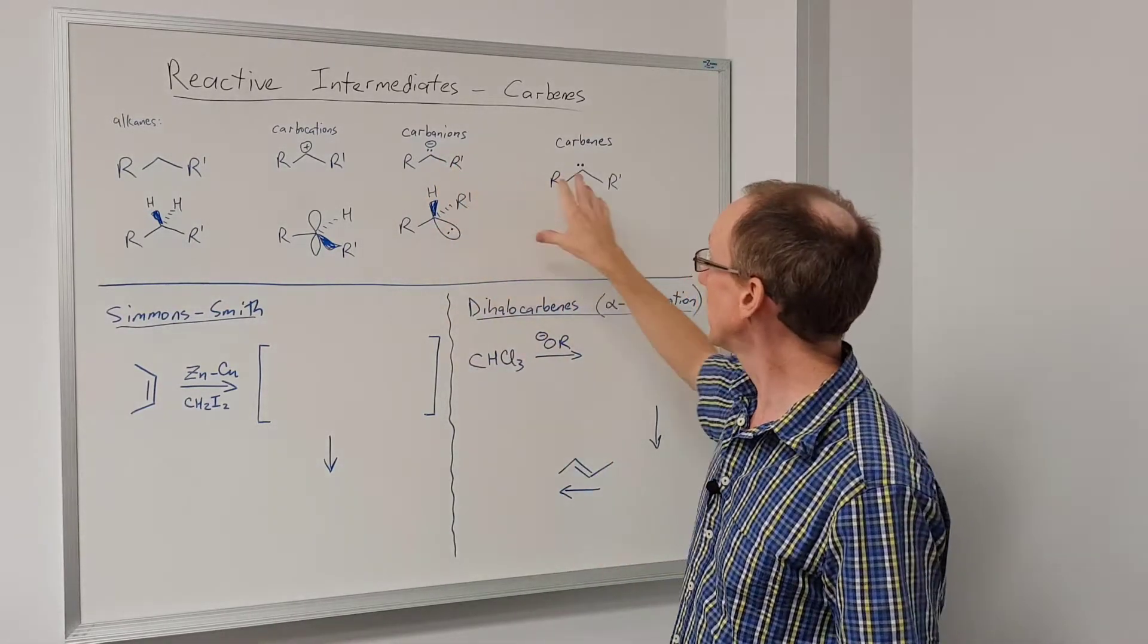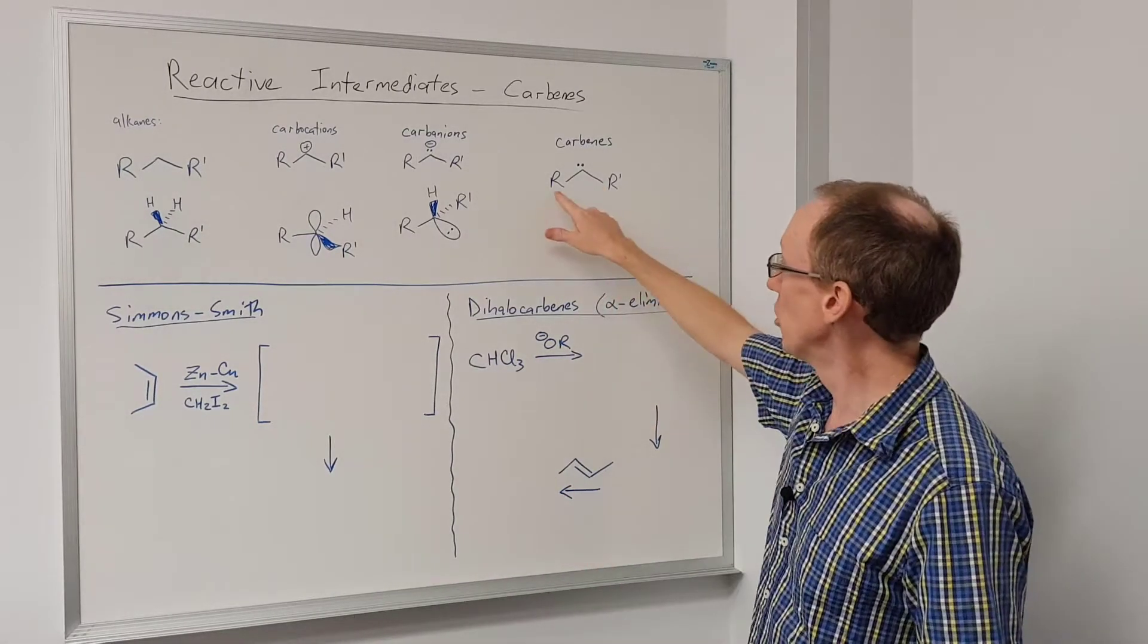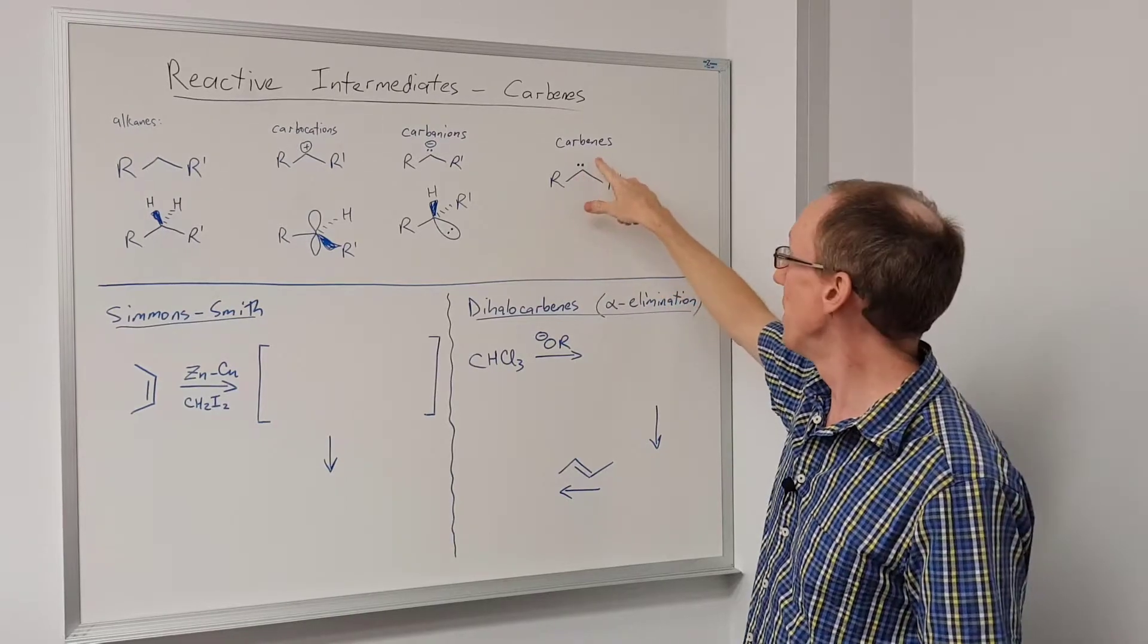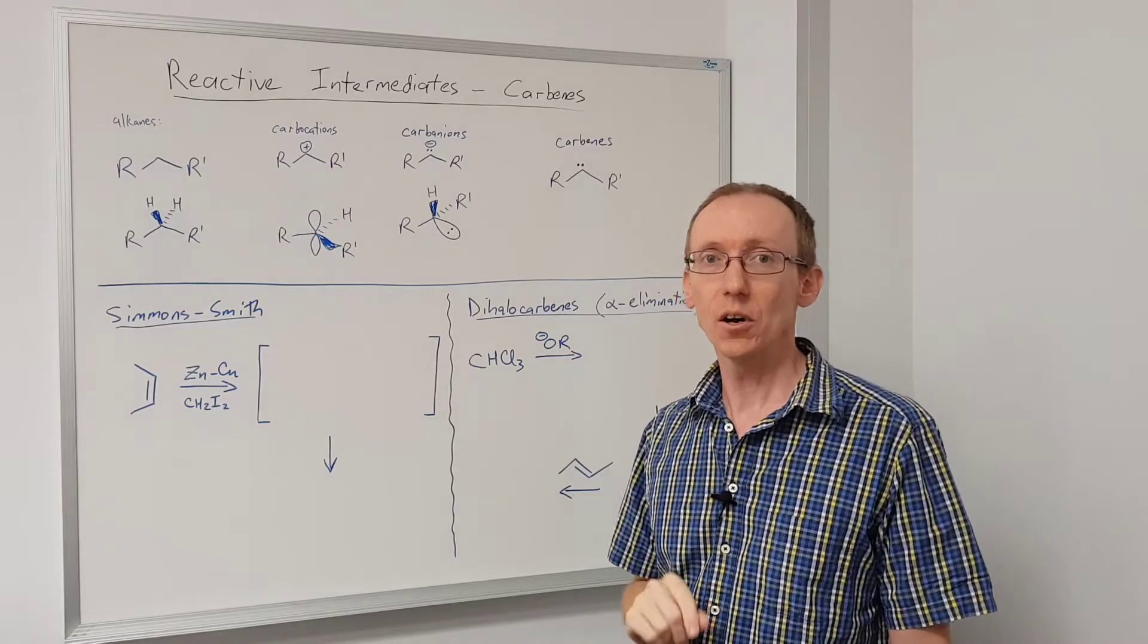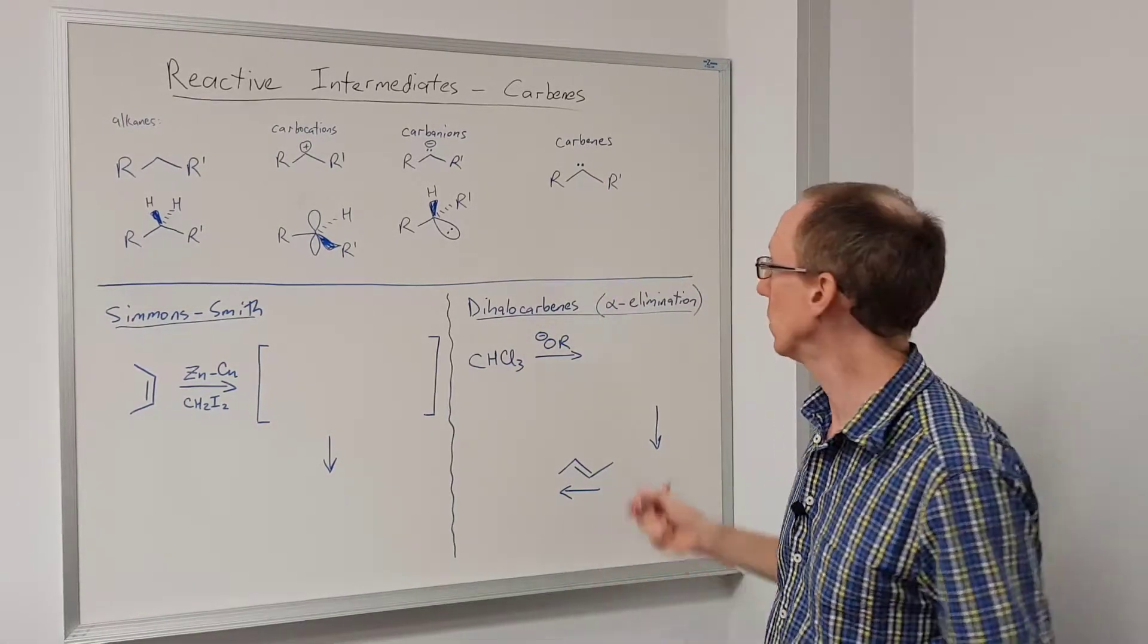So that brings us to carbenes. These are unusual reactive species. We would normally draw them like this with two groups attached to a carbon and then a lone pair of electrons. But unlike a carbanion it does not have a formal negative charge. So what does this species really look like?